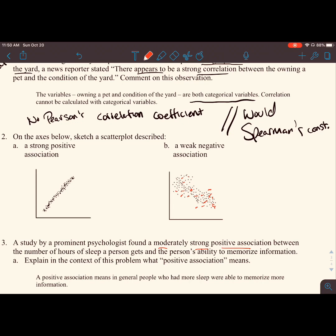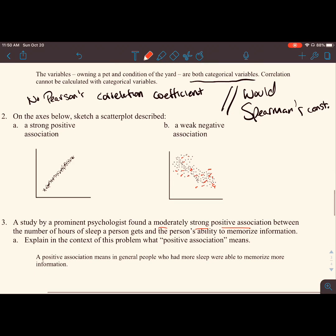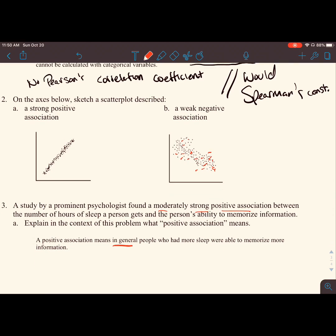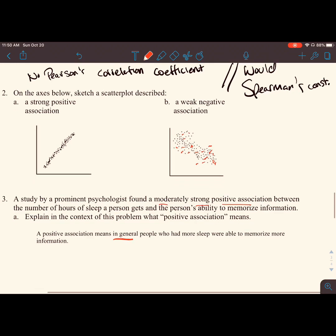In this context, a positive association means in general people who had more sleep were able to memorize more information. The increase in one also causes an increase in the other. Now, we don't say it actually causes, but in general people who had more sleep were able to memorize more information. Again, these are our weasel words. We can't be super precise because models are always wrong.